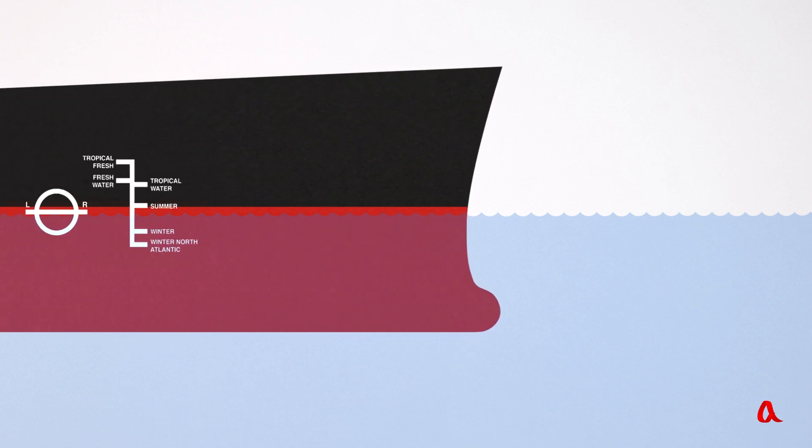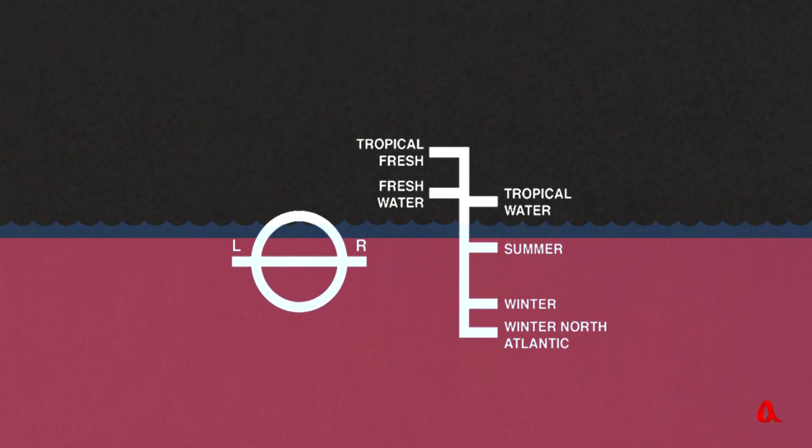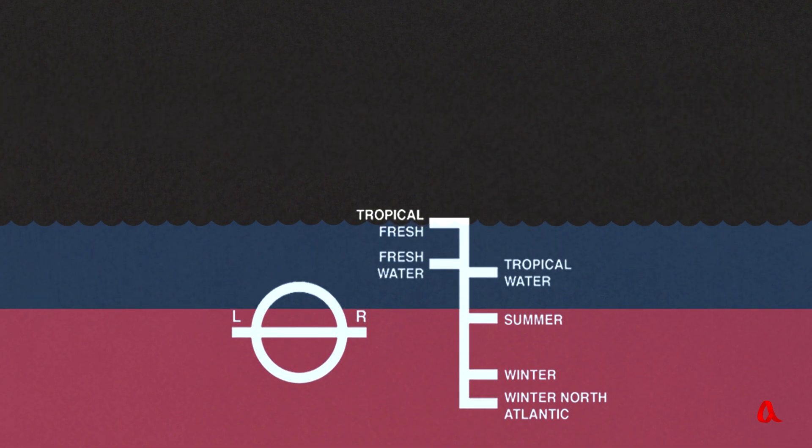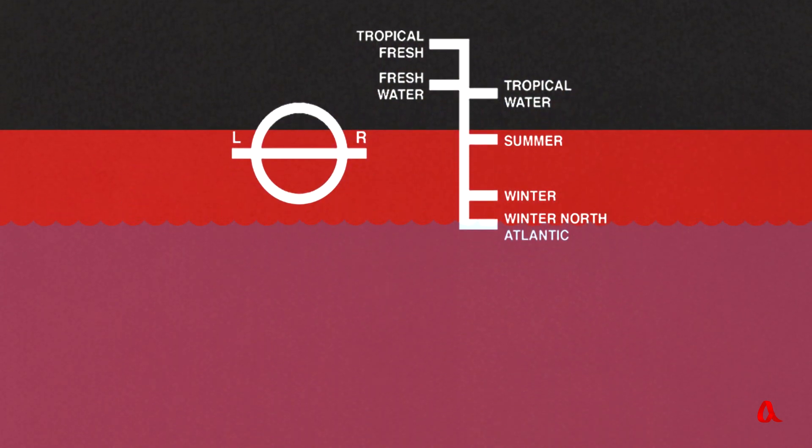Those levels are marked on the so-called Plimsoll mark. Tropical fresh water has the smallest density, so the vessel sinks in it deeper than in any other type. Winter North Atlantic water has the greatest density, so the vessel goes up in it to the greatest extent.